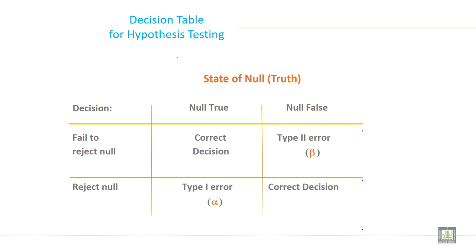So with this table, state of null true. So here, when null is true and you fail to reject and it is true, then it is called type 2 error.